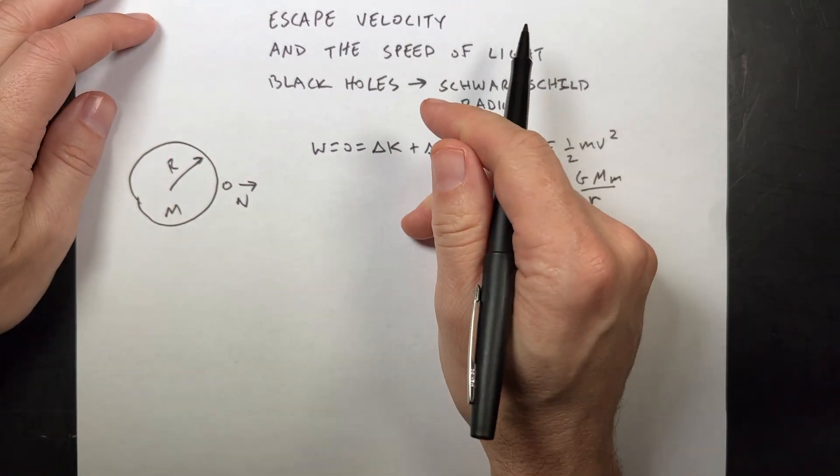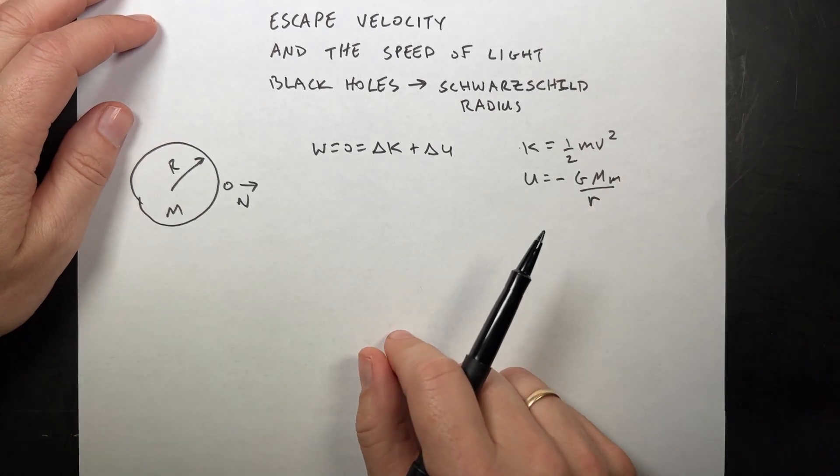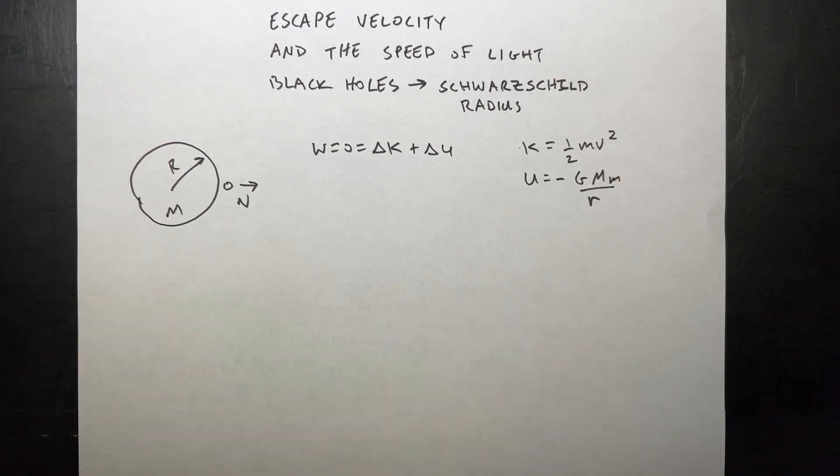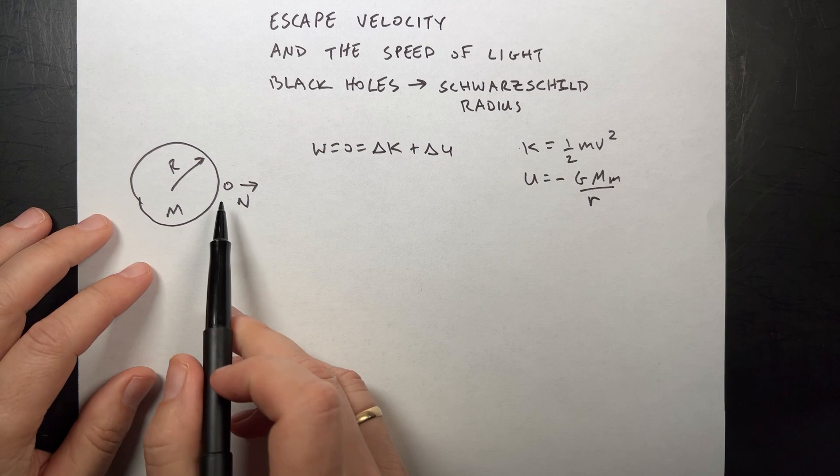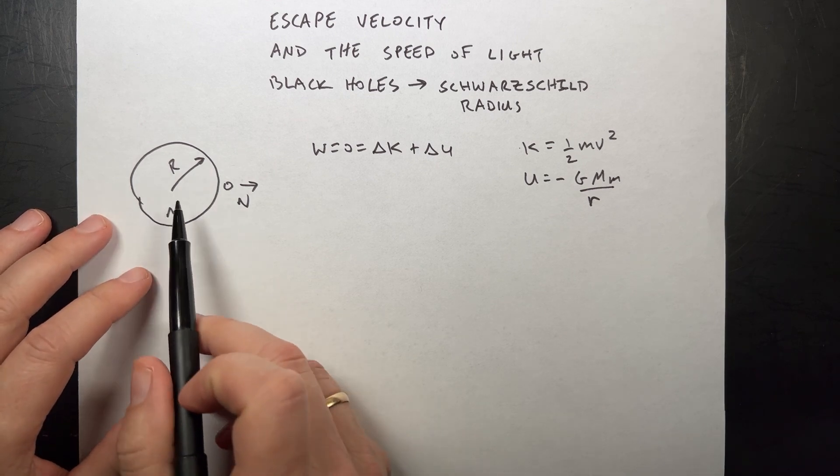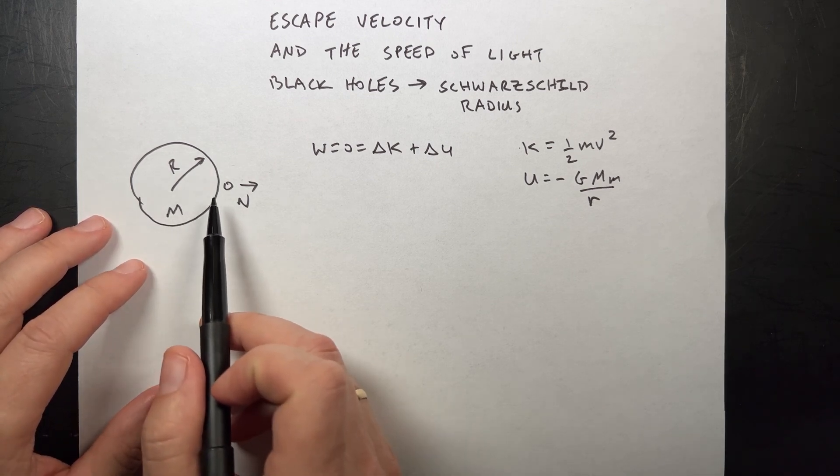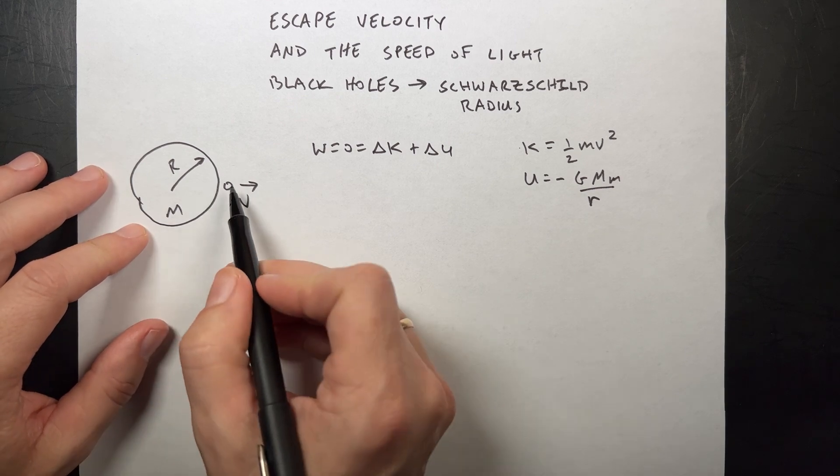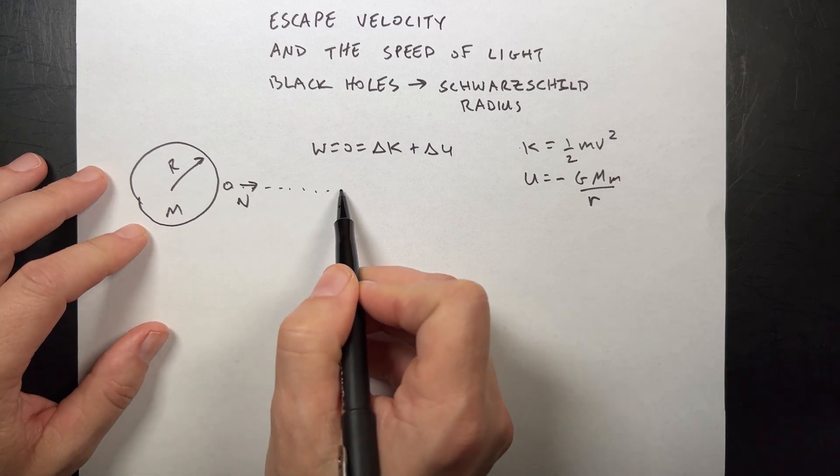Black holes are complicated, but we can do something really cool with this idea of escape velocity. Just to recap, if you have an object near the surface of a planet or a star, it doesn't really matter, or any location really, and you give it some velocity, it's going to move and then it's going to come back down.